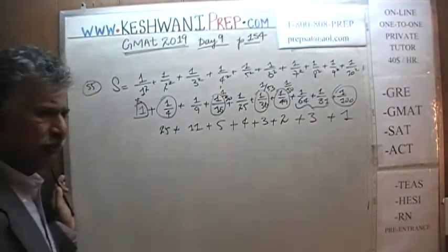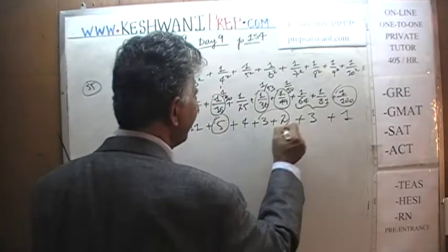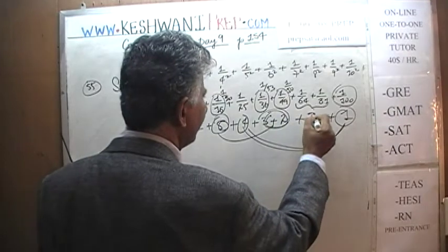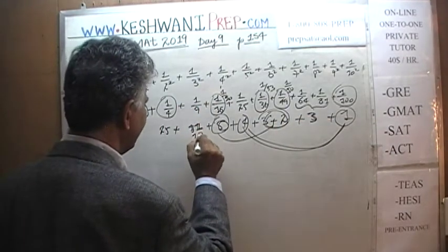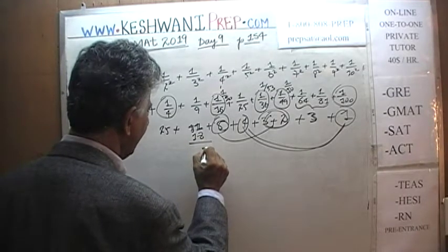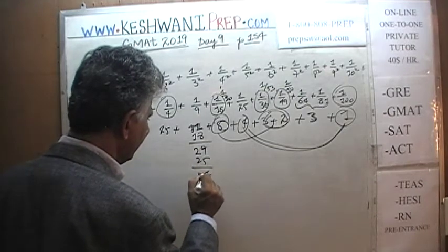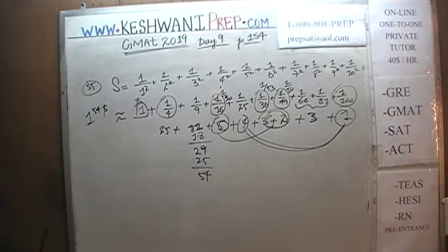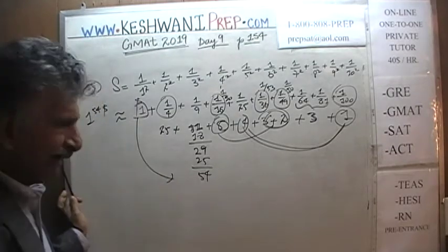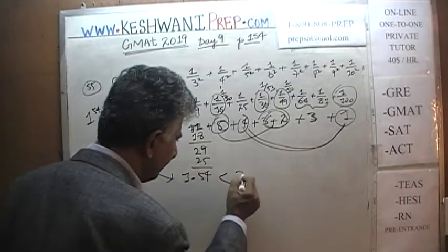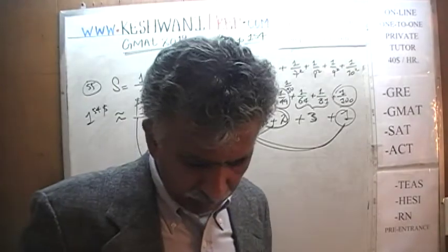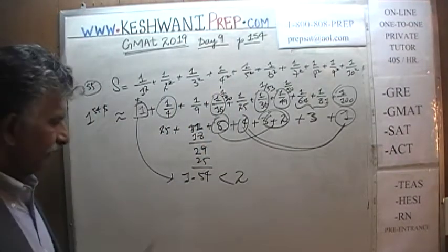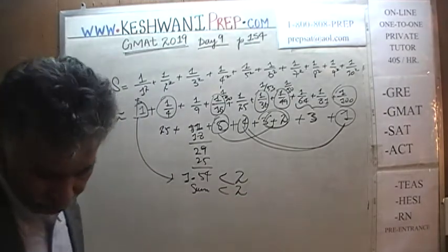All you have to do is quickly add them up. I see 5 and 5 — that's 10. Plus 4 and 1 — that's another 5. So 5 + 5 + 5 = 15. 15 plus 3 is 18, plus 11 is 29, plus 25 is 54. So all of this approximates to about a dollar and 54 cents — $1.54. And therefore the sum is less than 2. The answer is choice E.